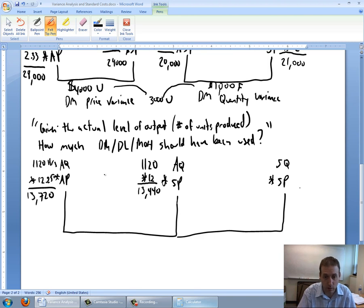Now comparing the two, I've got to say is this a good variance or a bad variance, is it favorable or unfavorable? First, I've got to figure out the amount. The difference there is $280, just 13,720 minus 13,440. Now you've got to say is it a good variance or a bad variance, is it favorable or is it unfavorable? Let's look at what's different. The quantity is not different, so that's not an issue. I paid $12.25 per hour. I'm supposed to pay $12 per hour. I paid too much. I overpaid. This is an unfavorable variance.